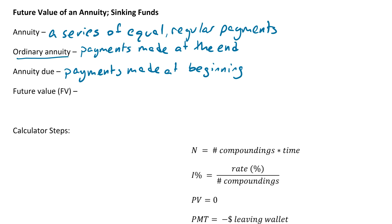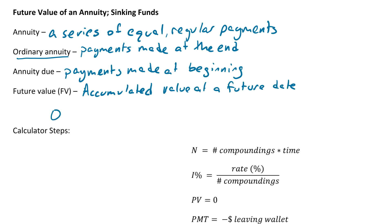For this class, we're just going to be looking at ordinary annuities, so payments are always going to be made at the end of the period. Future value is the accumulated value at a future date. What this actually means is we're going to start with no money, put money into some kind of account or investment, earn interest off those payments, and at the end that's our future value.